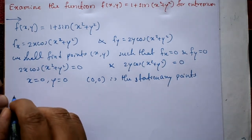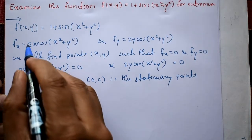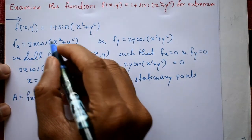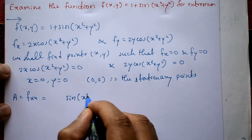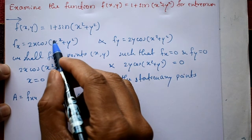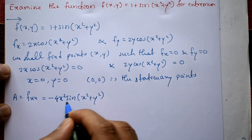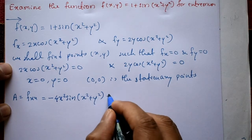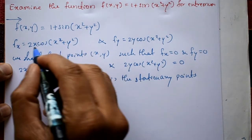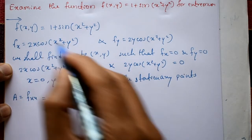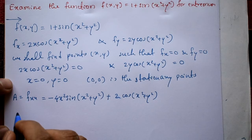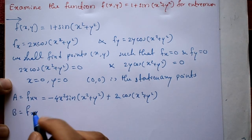Now compute A = ∂²f/∂x². Differentiating 2x · cos(x² + y²) again with respect to x using the product rule gives: A = −4x² · sin(x² + y²) + 2cos(x² + y²).